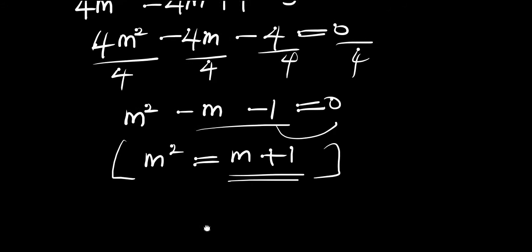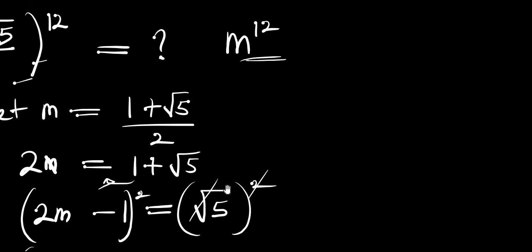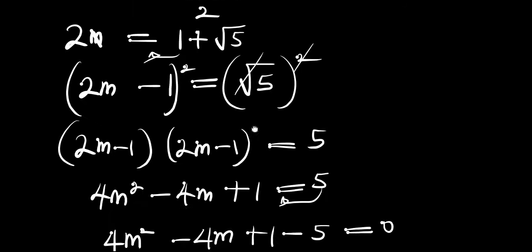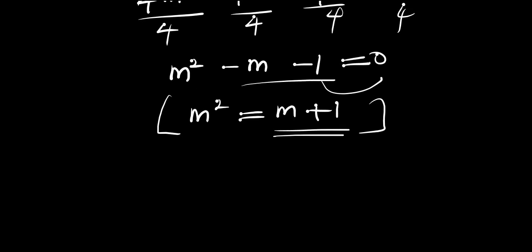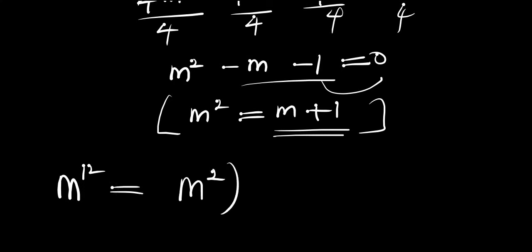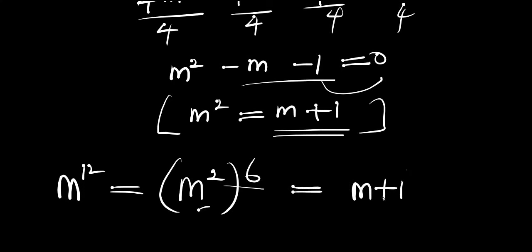Now remember we had m to the power of 12, so that is what we are solving for. We can write m to the power of 12 as (m squared) to the power of 6, because 2 times 6 equals 12. And since m squared is simply m plus 1, this means we are going to have (m plus 1) raised to the power of 6.